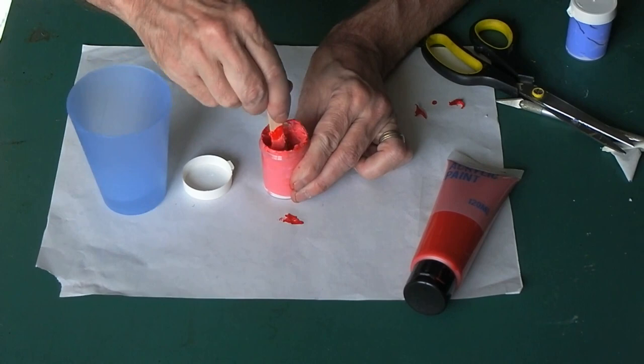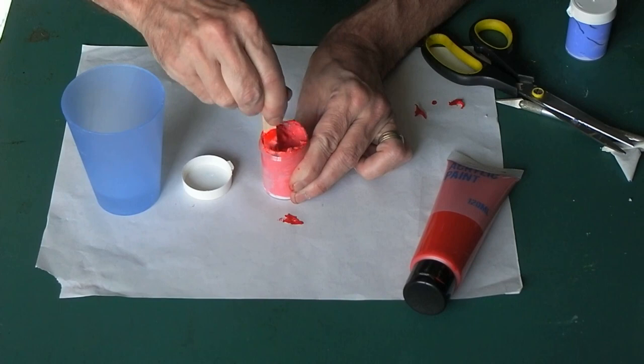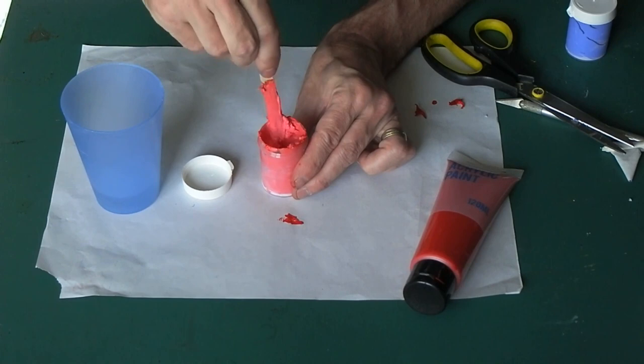So we don't want it to flow too much. We need it to retain its shape but we want to be able to pipe it out of our piping bag.